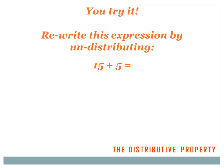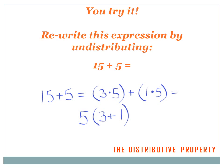Now here's one for you to try on your own. Pull out a piece of paper and a pencil and undistribute 15 plus 5. I can rewrite 15 plus 5. The 15 can be rewritten as 3 times 5, because 3 times 5 equals 15. The 5 can be rewritten as 1 times 5, because 1 times 5 equals 5. Now I've got a 5 inside both of the brackets, and I can pull that out and multiply 5 times the expression (3 plus 1).